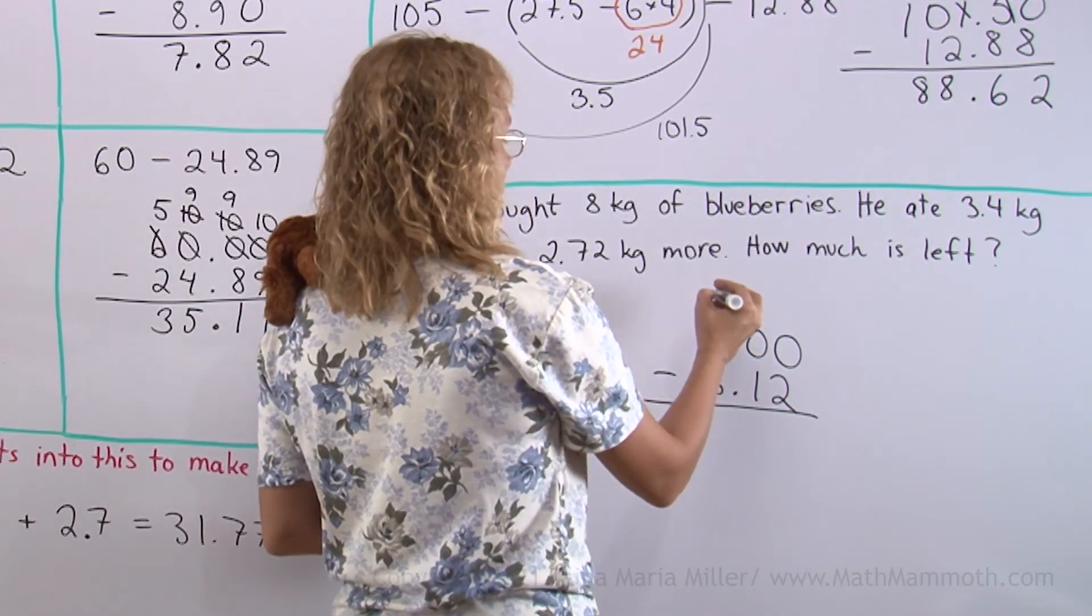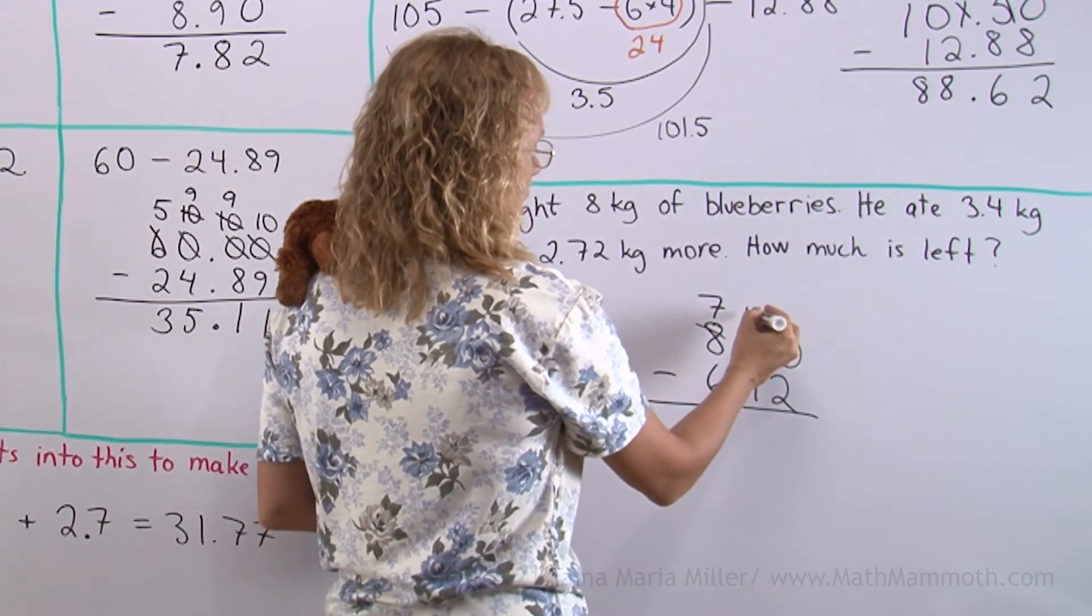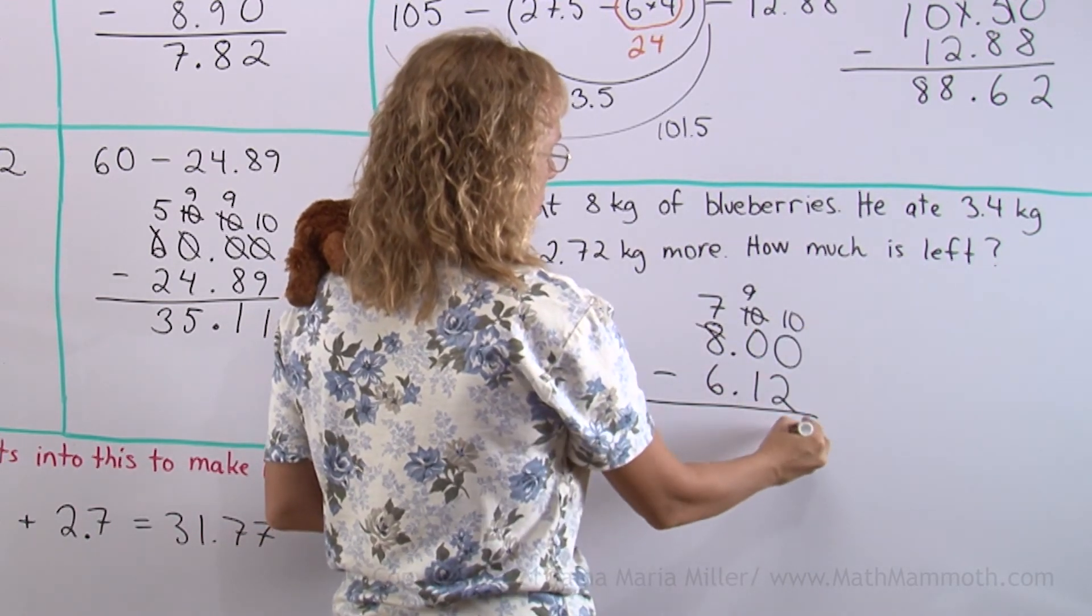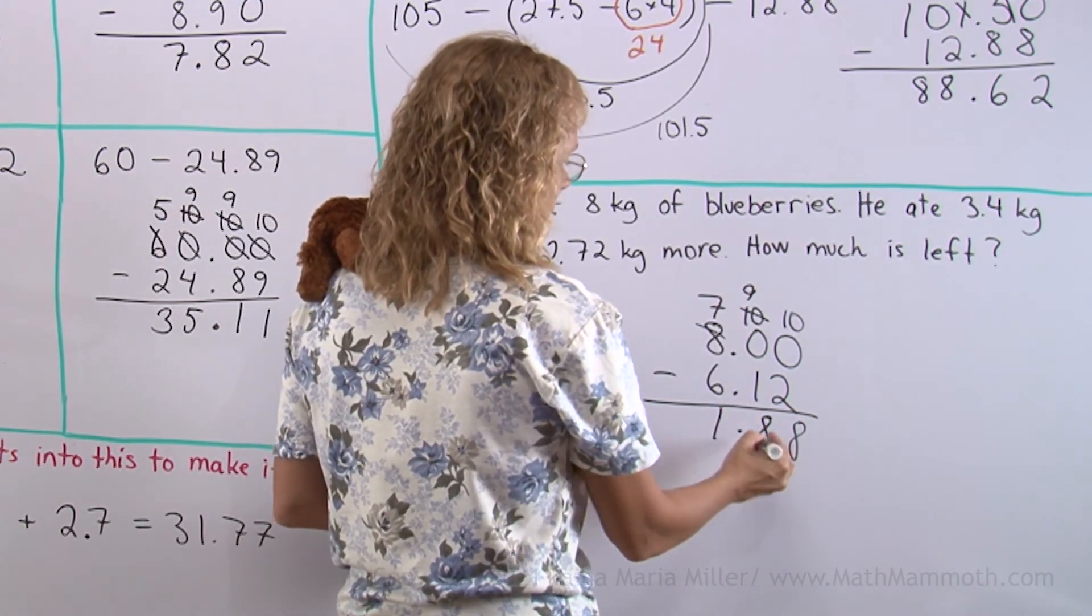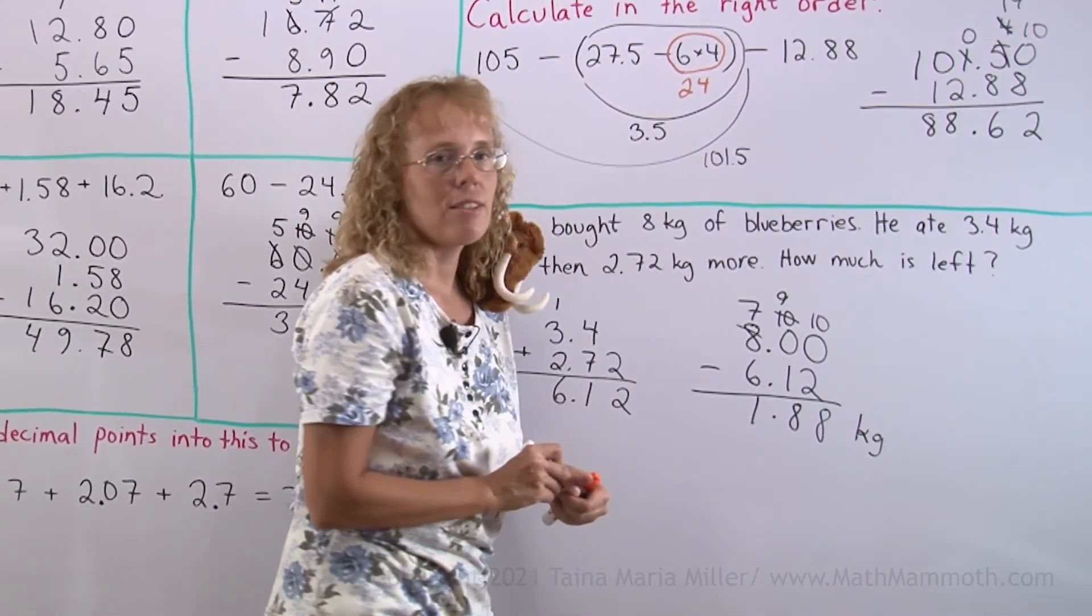And now comes the regrouping again, or borrowing. Borrow from 8, leaves 7 here and 10 here. And then from 10 leaves 9 here and 10 here. 10 minus 2 is 8. 9 minus 1 is 8. 7 minus 6 is 1. 1.88 kilograms left, or 1 kilogram 88 hundredths of a kilogram.